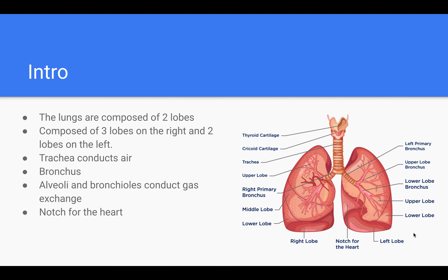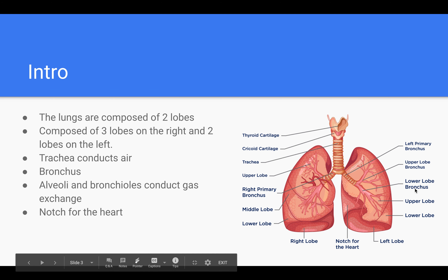In this area of the lungs, it contains the heart, trachea, esophagus, and many lymph nodes. The lungs are covered by a protective membrane also known as the pleura, and they are separated from the abdominal cavity by the muscular diaphragm.